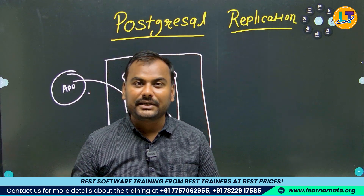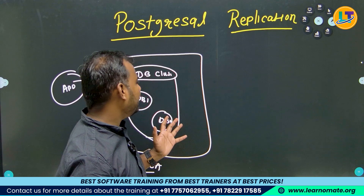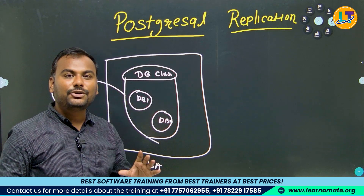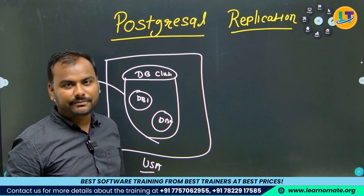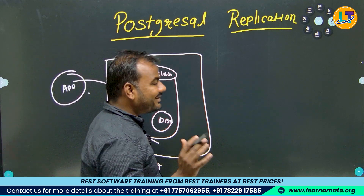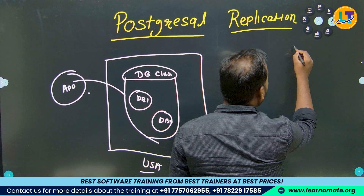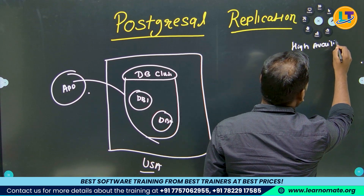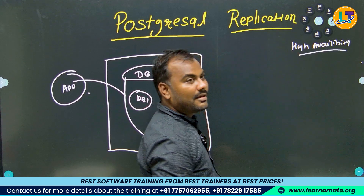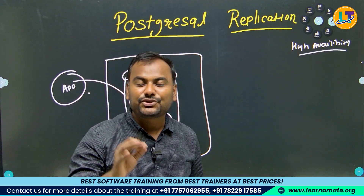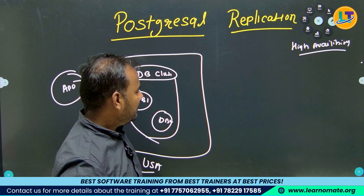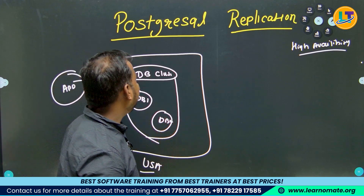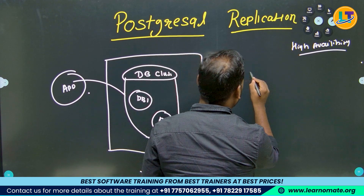The client is ready to spend a lot of money and he's saying to do something, but make sure this should be up and running at any cost — I do not want my customers to get downtime. So when the customer does not want downtime, we call it high availability. High availability means at any cost my users and customers should not be getting impacted. So what we can do — we can create a replica of it.